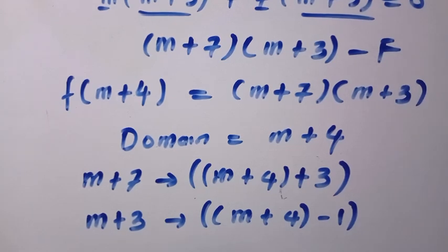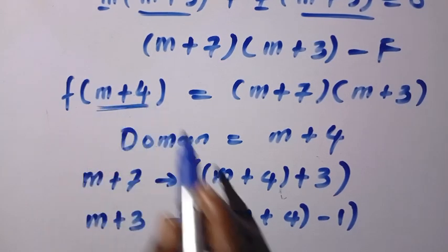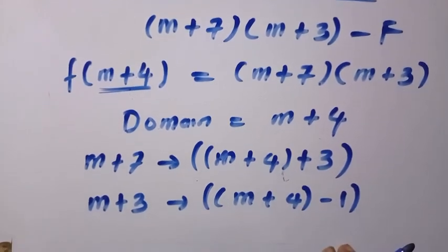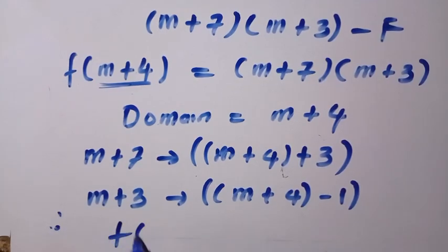So after we have achieved these 2 things, then everywhere we see m plus 4, we are going to be replacing it with just m. So that we get the result that we need. Here we have f of m, since it is what we need.